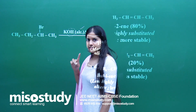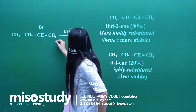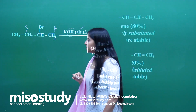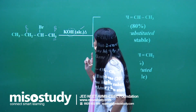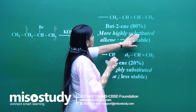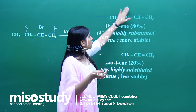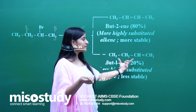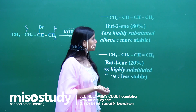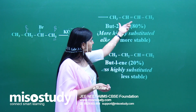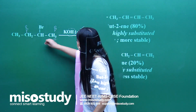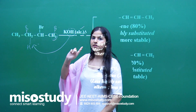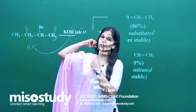This strong base will abstract the weakly acidic beta hydrogen. Since we have two possible beta hydrogens — one on each side — which will give the more favourable product? As per the Zaitsev rule, the highly substituted product is preferred. More hyperconjugated structures are possible for the more substituted alkene, making it more stable. So the OH⁻ will abstract this hydrogen much more quickly compared to the other.